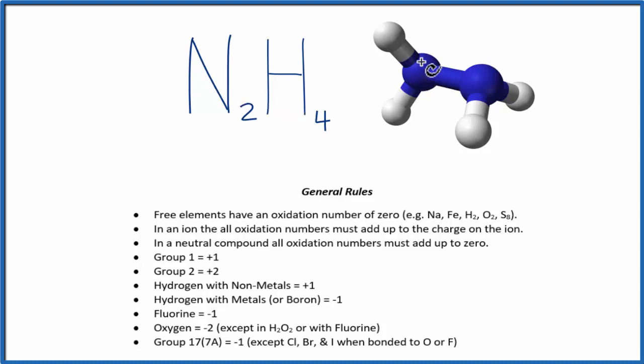So the nitrogens, those are the bluish ones. Hydrogens, those are the white. We have four hydrogens. We'll use these rules here to figure out the oxidation numbers.